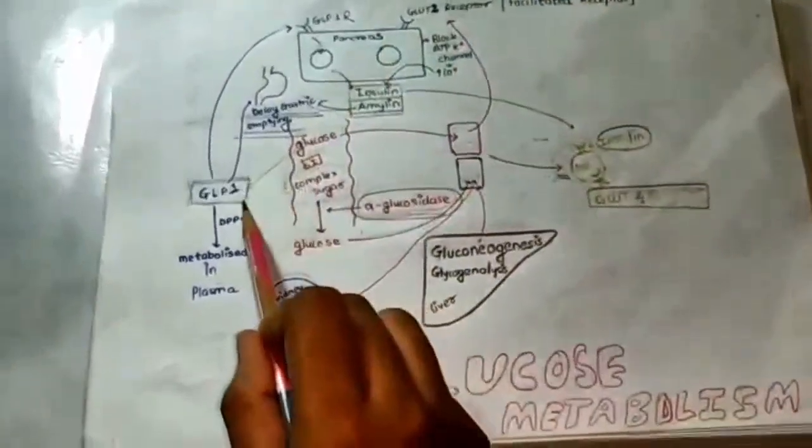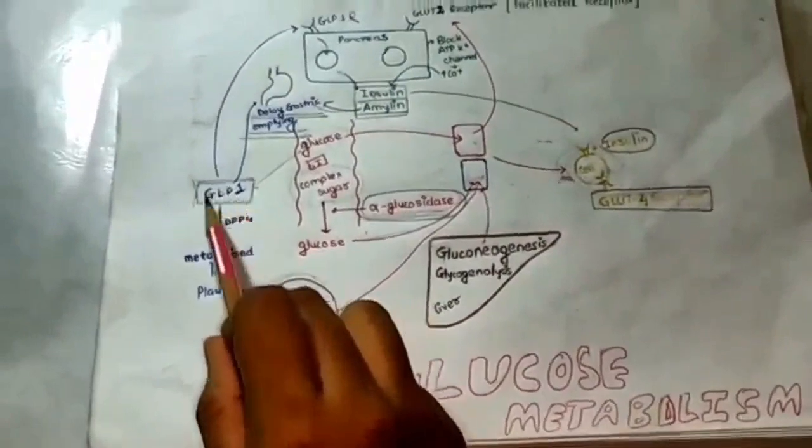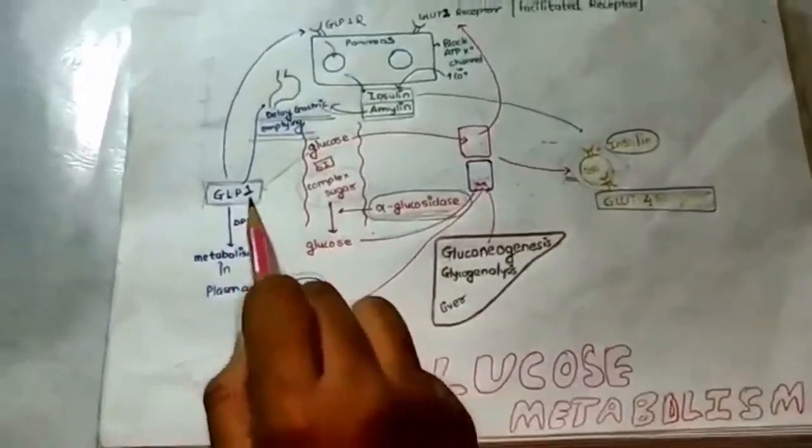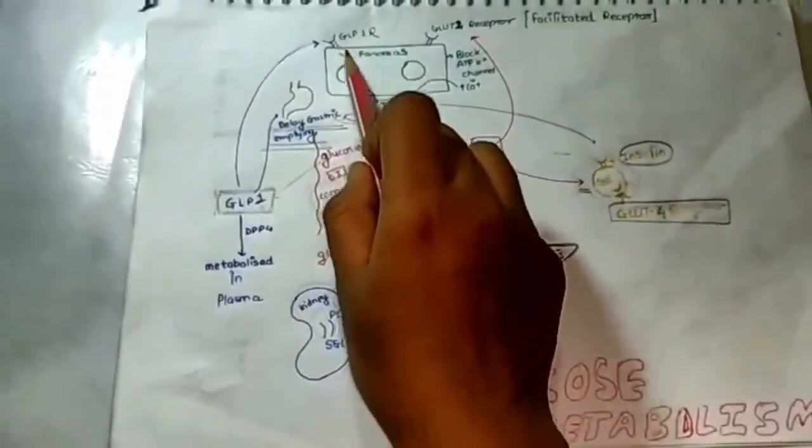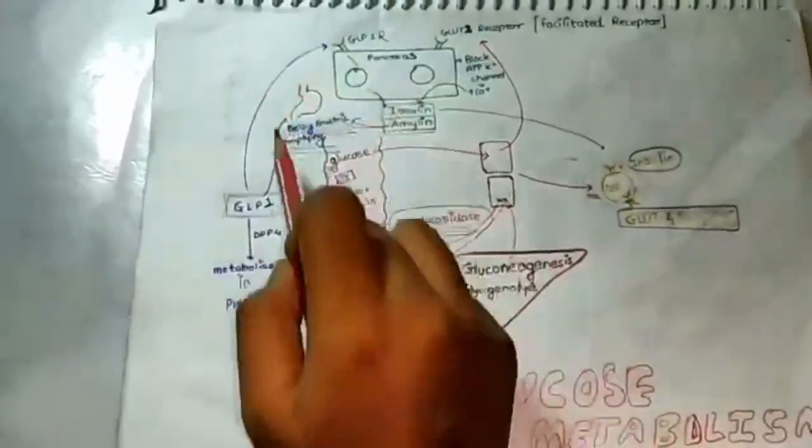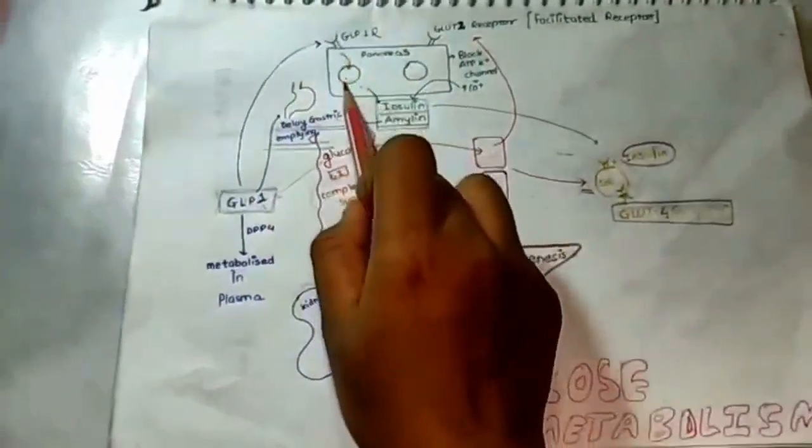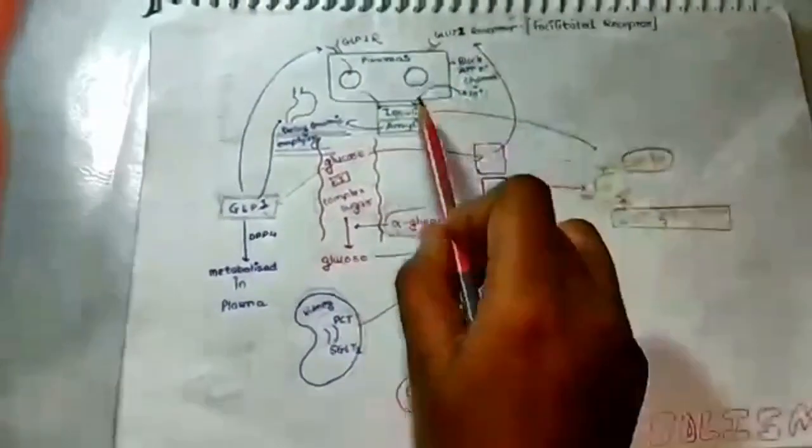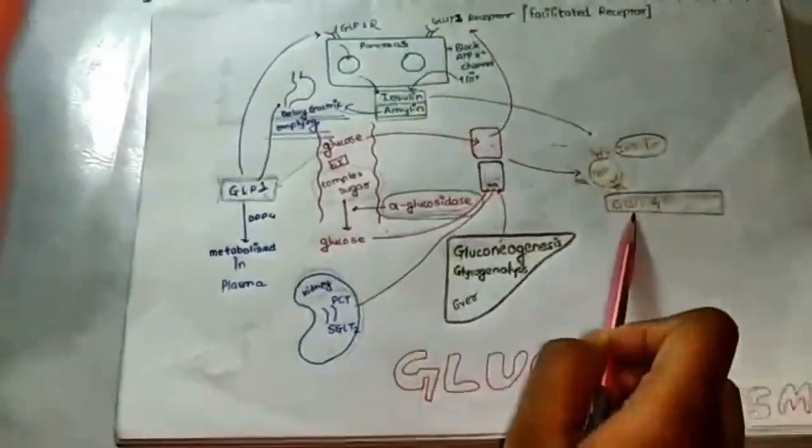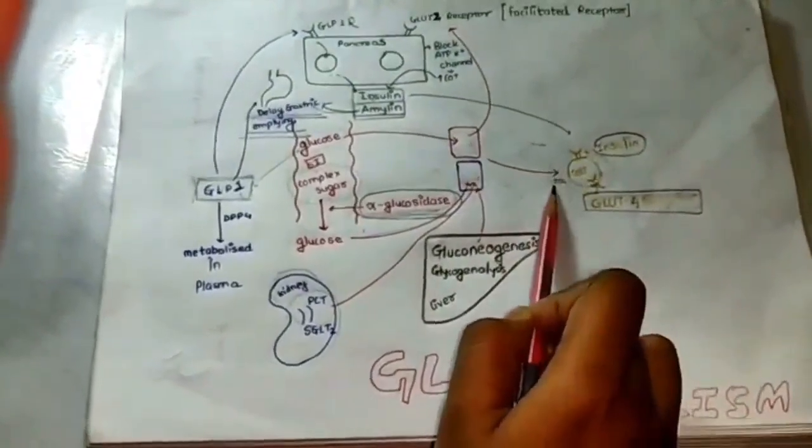Glucose also releases a peptide known as glucagon-like peptide 1. Glucagon-like peptide 1 has receptors on pancreas. The GLP-1 receptor will take up GLP-1 and this will stimulate beta cell to release insulin as well as amylin. Insulin will go there and help in exposing GLUT4 receptor to the glucose.